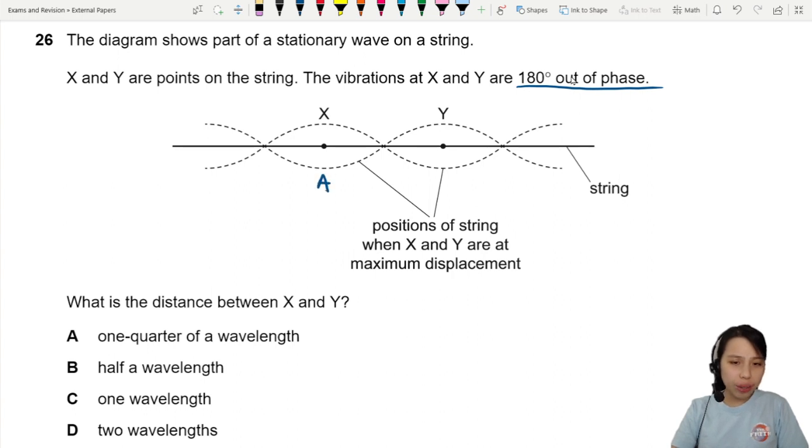So X is an antinode. Y is also an antinode. When you ask me what's the distance between two antinodes, I will say that's lambda over 2.